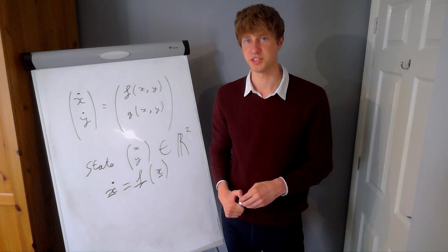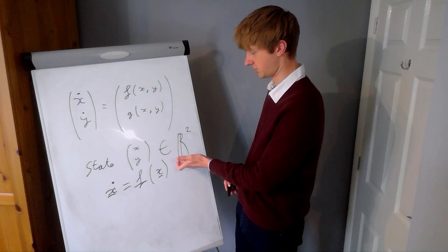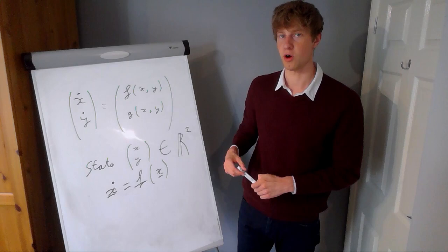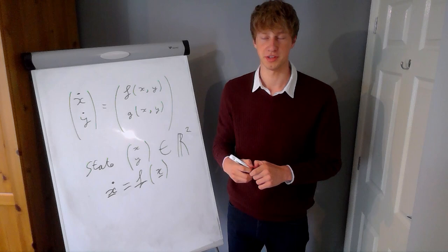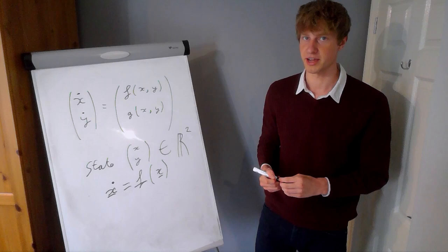This is called the phase space — it's just the coordinate system we're using. We plot x and y and then plot the vector field given by the function on that diagram. From the diagram you can see what's going to happen around the fixed points. We'll then start studying the maths to actually work out how we can predict what those fixed points are going to look like.